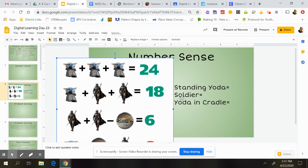Okay, so over here I have the equal signs, so I'm calling this little guy right here Baby Standing Yoda, this one the soldier, and this one a Yoda in a cradle. I am sure that there's probably a better term for it, but that's just what I'm going to start with.